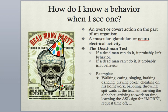For example, being reclined or laying down is probably something a dead man can do, so it's not really a behavior. But the verb 'laying down' — a dead man can't do that, and so in that sense, laying down as something you do is a behavior. If a dead man can do it, it's probably not behavior; but if a dead man can't do it, it probably is behavior. Examples of behaviors include walking, eating, singing, barking, dancing, playing poker, cheating on your homework, throwing spit wads, learning the alphabet, getting to work on time, and learning ASL — all of these things are behaviors.